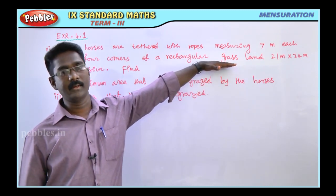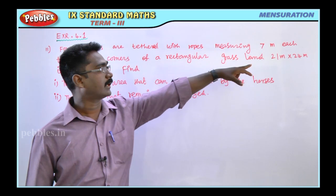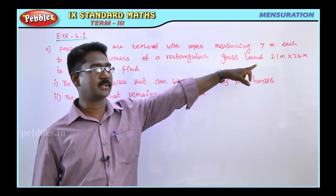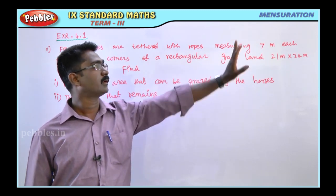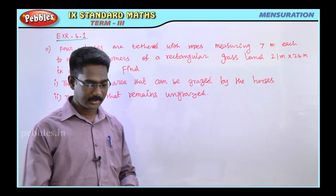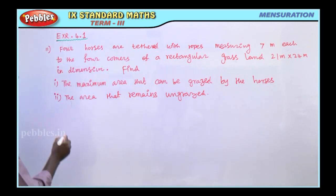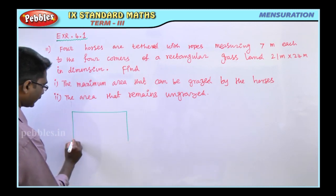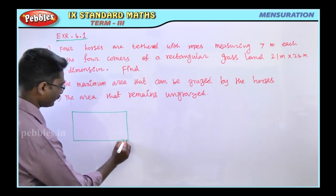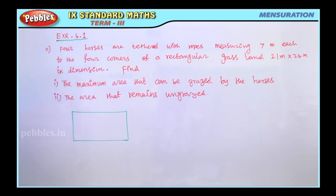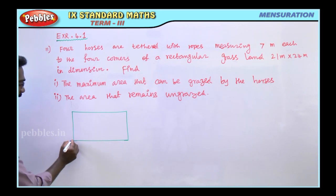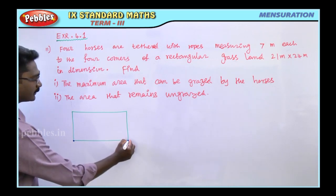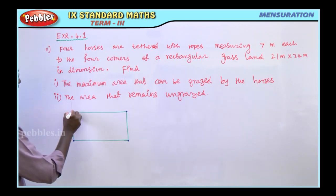The rectangle has length 21 meters and breadth 24 meters. I'm going to draw the rectangular grassland. It has four corners, and on those four corners I'm going to place four horses.